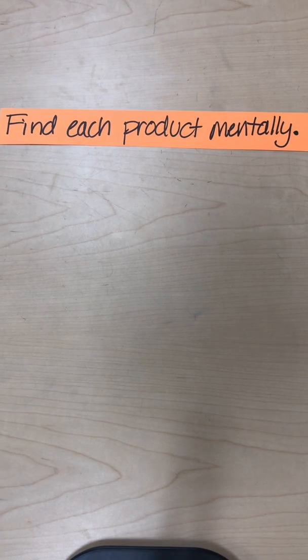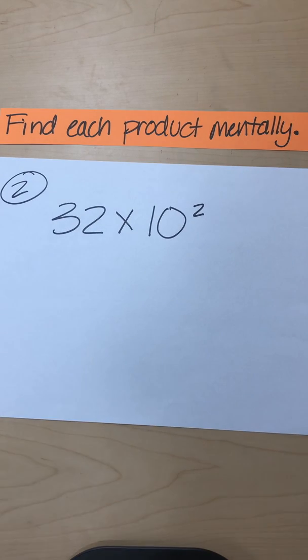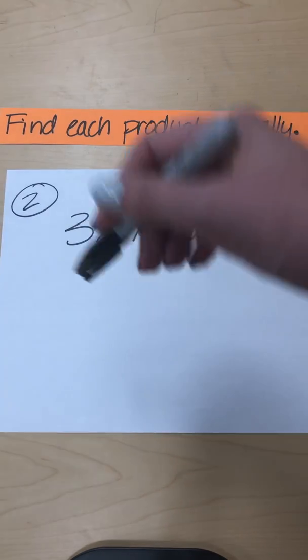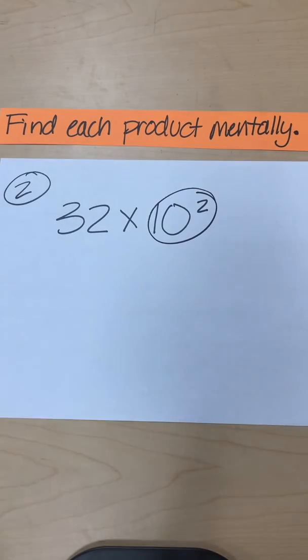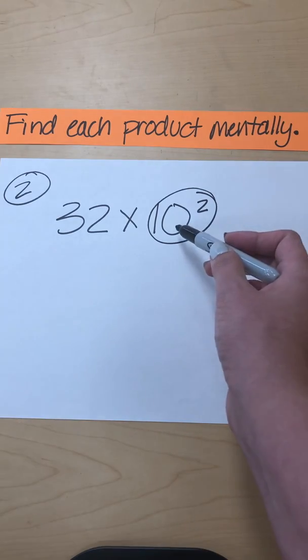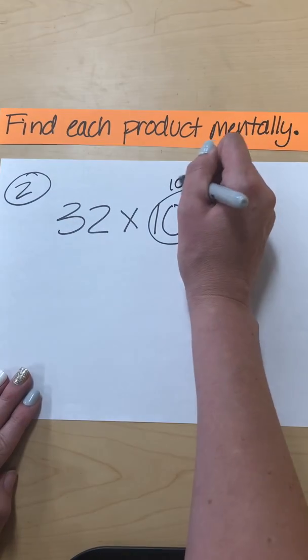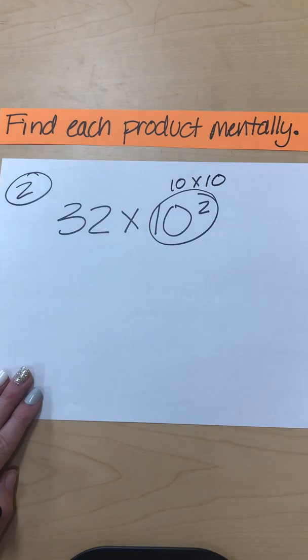Let's go to another problem. We're going to get a step harder every time. Here's number two. Again, find each product mentally. So we're going to try to do this as much as we can in our head. So before I even start, if you have an exponent, go ahead and work that out first. Don't leave it as an exponent. So we're going to focus on this very first before we even get to anything else. So what is 10 to the second power? It's 10 times 10. Well, what's 10 times 10? 100.